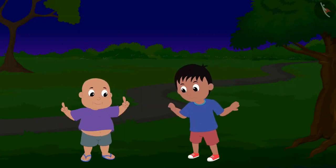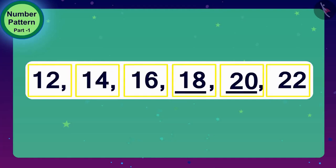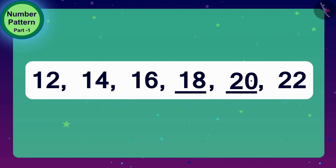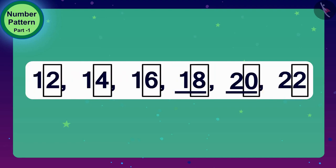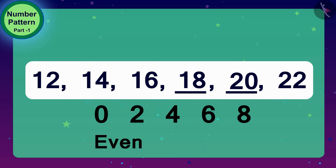Both Raju and Bablu started dancing. Children, do you see one more special thing in these numbers? Here all the numbers have 0, 2, 4, 6, or 8 at the unit position. Do you know that such numbers which have 0, 2, 4, 6, or 8 at the unit's place are called even numbers.